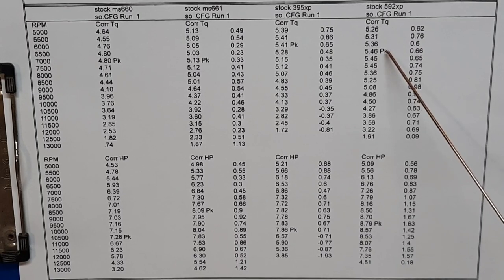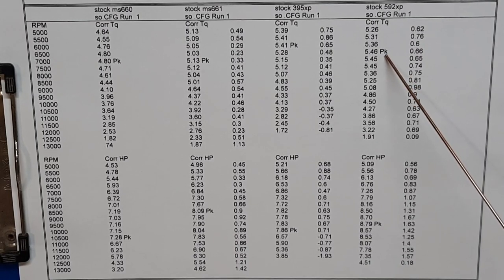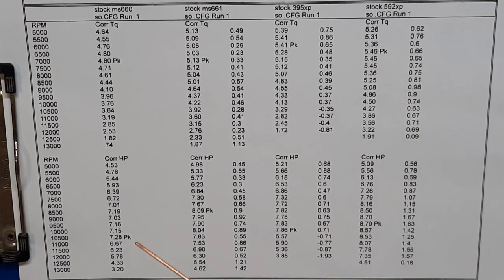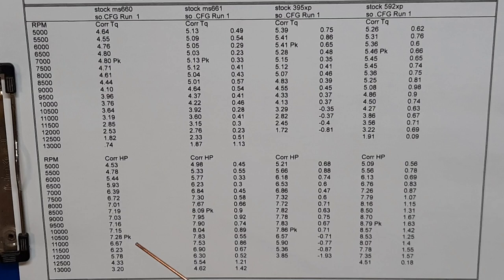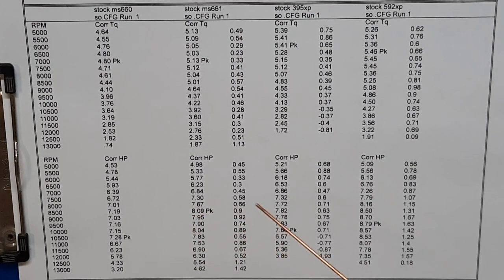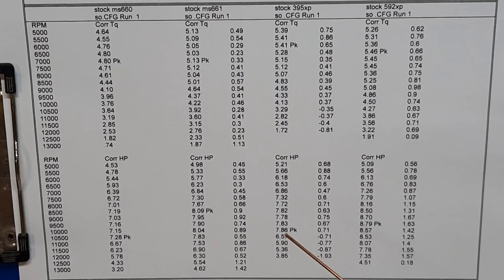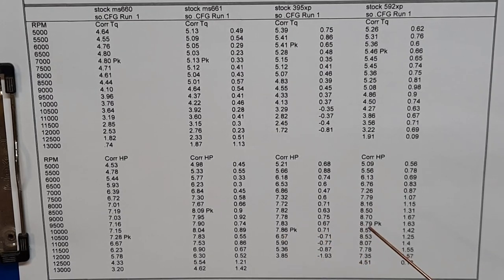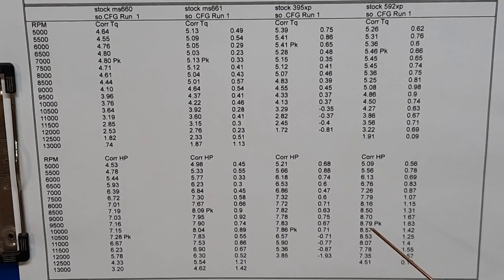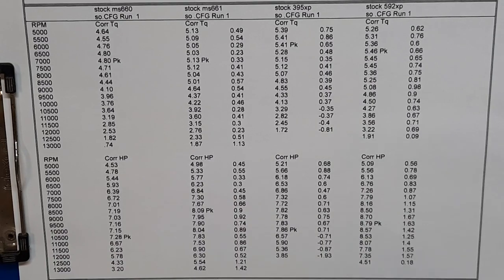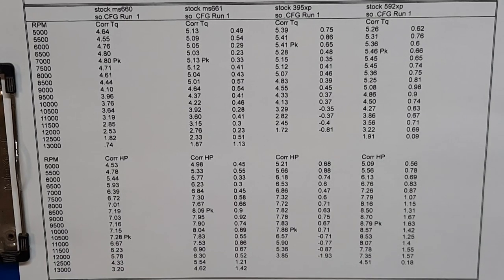Down here, same with the horsepower. 7.28 for the 660, 8.09 for the 661, 7.86 for the 395, and 8.79 horsepower for the 592. This was pretty fun. Is this how you thought it was going to go? Leave a comment below and let me know.